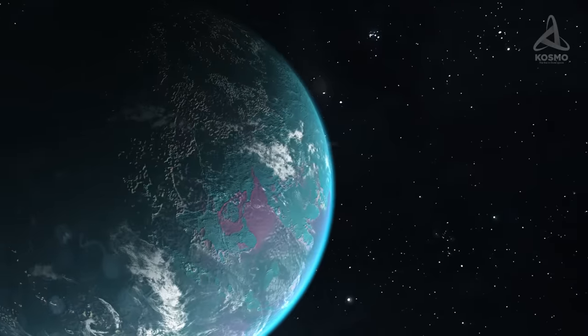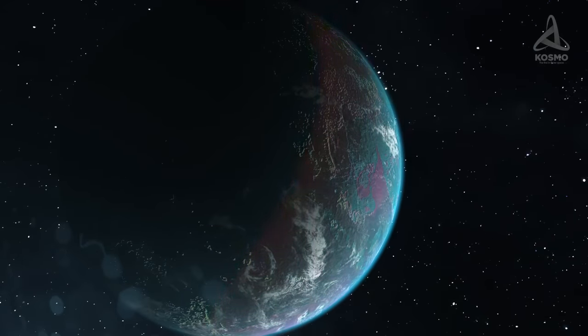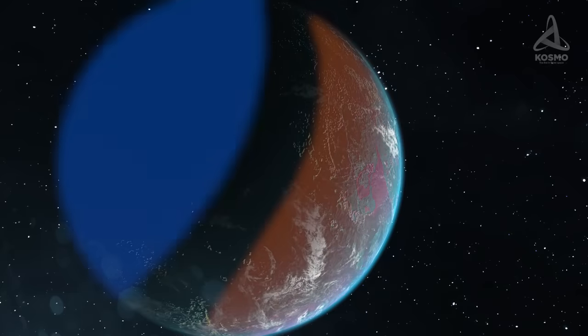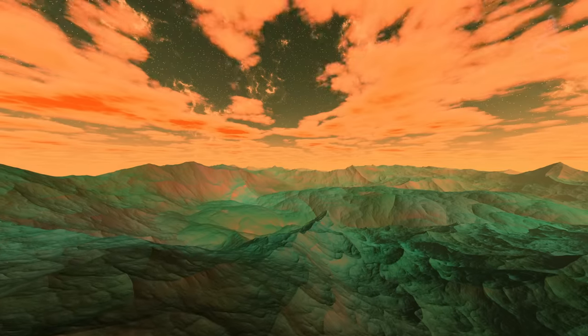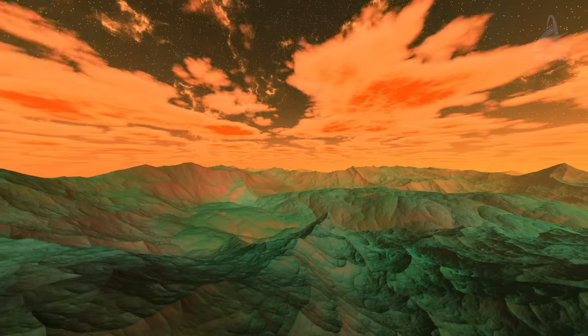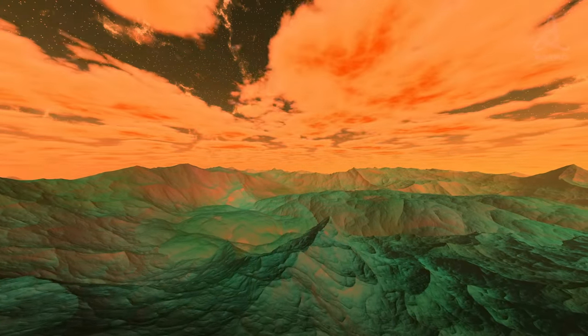Since the planet is likely to face its star with the same side at all times, the temperature on the sunny side should be high, and the temperature on the shadow side quite low. In the ring-like area at the border between them, the temperature should be moderately comfortable, although due to regular heating of the planet, the atmosphere would be constantly in turmoil, which should result in strong winds.